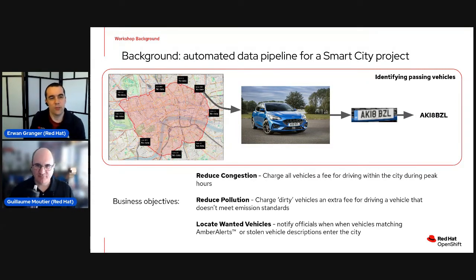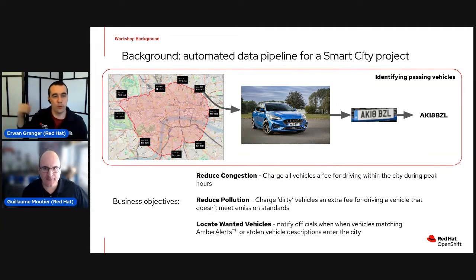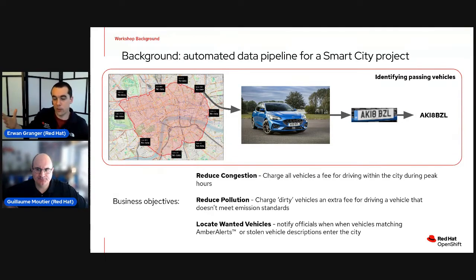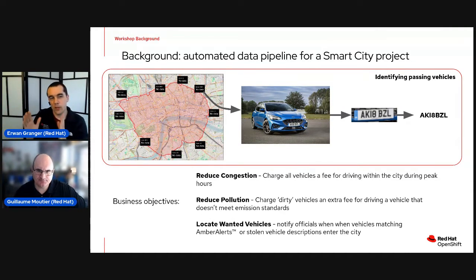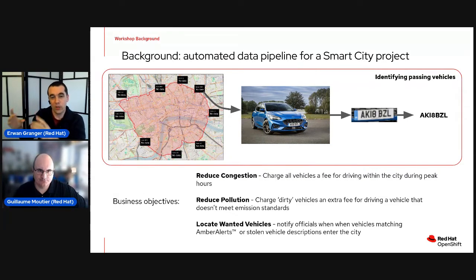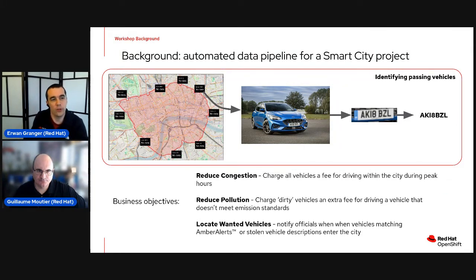Last month we had a more generic object detection workshop — the recording is available — where we basically just recognized things like car, house, flower pot, whatever. That has its uses, but here we're looking at something much more specific. We don't need to recognize trees; we care about the car and then the license plate. And then we want to do text recognition on the license plate. So this is a more specific use case compared to the more generic object recognition.